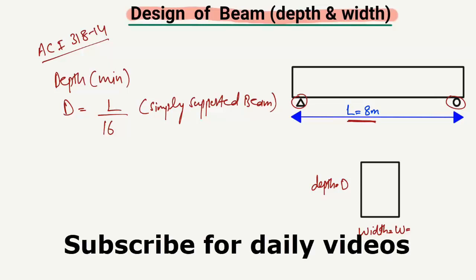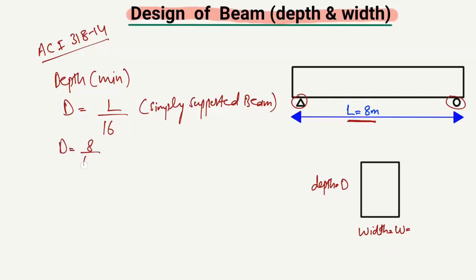The length of the beam is 8 meters, so we put 8 divided by 16, which gives us 0.5 meters. Since the length was in meters, if we convert this into millimeters we multiply by 1000, and we get the depth requirement as 500 millimeters. So the minimum depth should be equal to 500 millimeters.